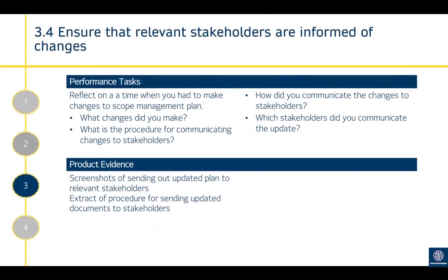Criterion 3.4 is to ensure that relevant stakeholders are informed of changes — there is a similar criteria in the communications unit so there's some overlap. If there is a change to the project, it's important that all relevant stakeholders are informed. Anyone working on that activity, finance if additional funding is required, people conducting the activity who now have extra days, and resource owners if equipment is moved — all need to be kept up to date. If they don't know, they will make decisions based on outdated knowledge, which can cause a lot of problems for the project.